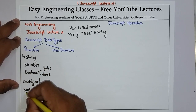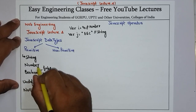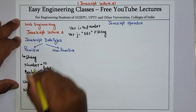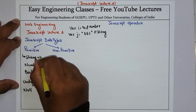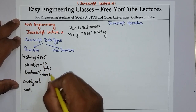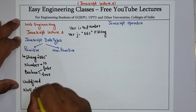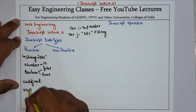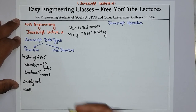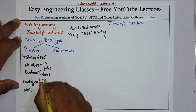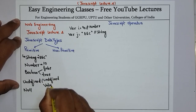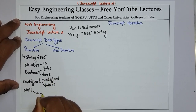These five are your primitive data types in JavaScript. String represents a sequence of characters. Number represents numeric values, for example 10. Boolean can be true or false. Undefined represents an undefined value — a variable that has not been defined. And null means no value at all.